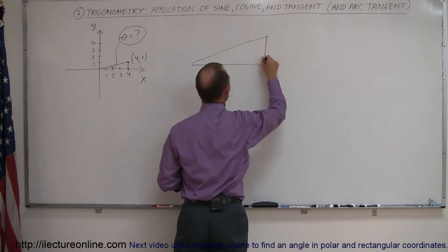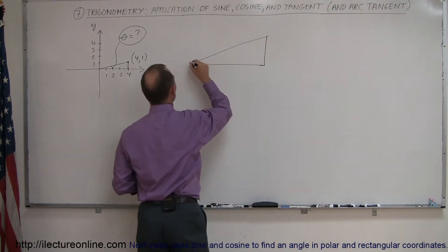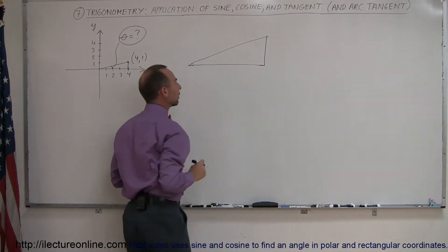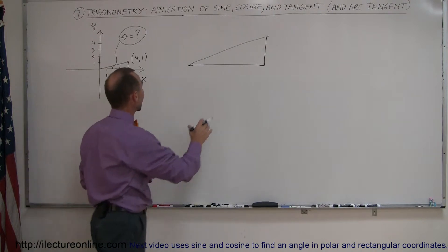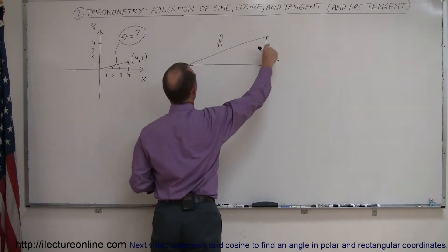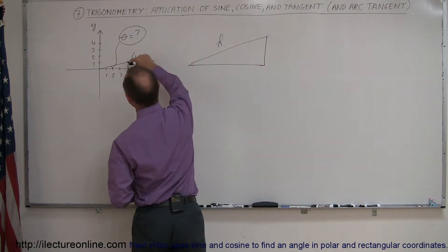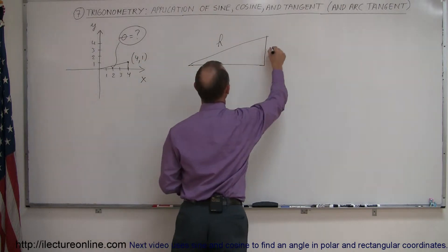So by now you realize that every time we deal with the sine, the cosine, and the tangent, we typically are dealing with triangular shapes. So we have the hypotenuse H. We have the opposite side, which would be the difference between 1 and 0. That would be 1, therefore.